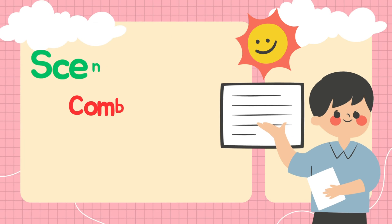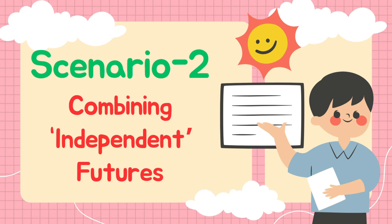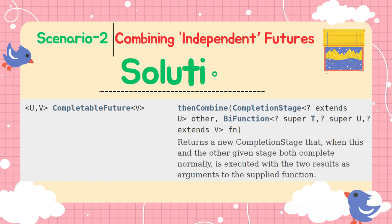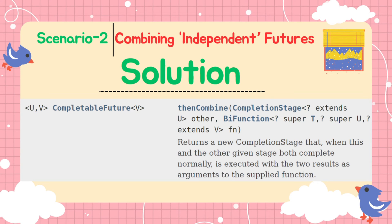Now let us move to the second scenario. Suppose there are multiple futures and they can execute independently in parallel, and in the end we can combine all the future results to perform some more operations. Unlike in our previous example where findArea was dependent on getRadius, the futures in this scenario will not depend on each other for their own execution. For such scenarios, we can use the thenCombine functionality. It will be called on one of the futures and we have to provide the other future as an argument. In addition to that, we will also need to provide a BiFunction which will consider the output of both futures as input parameters and using the output of both futures, we can perform some operation to return a final result in the form of a CompletableFuture.